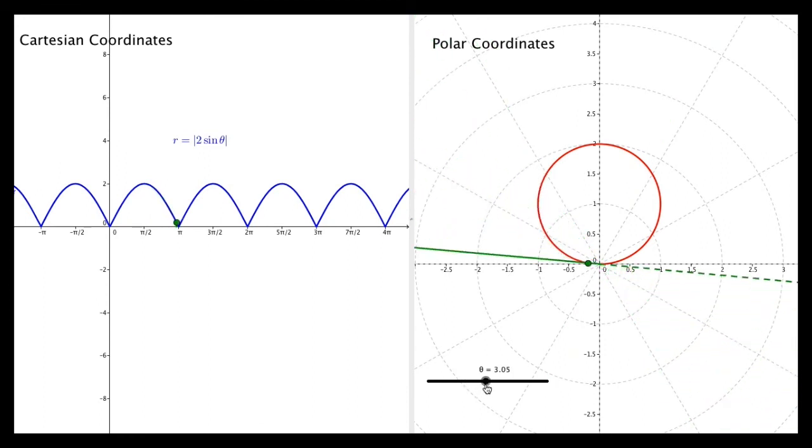Now we get to pi. And now we're going through angles from pi to 3 pi by 2, and we're still on the positive part of that ray. Positive r values for those corresponding angles. And so we trace out the bottom circle. So that's pretty neat.